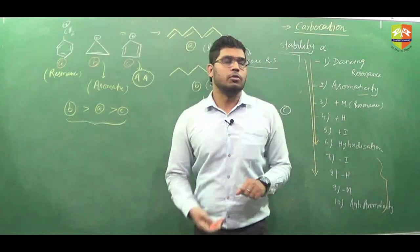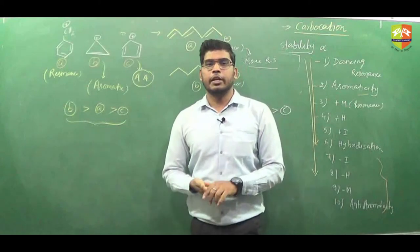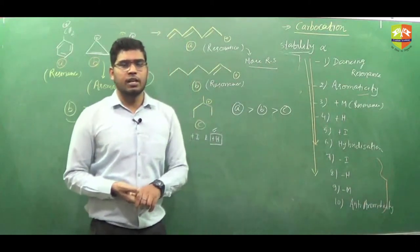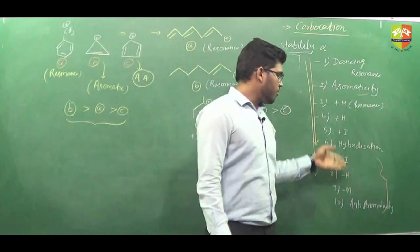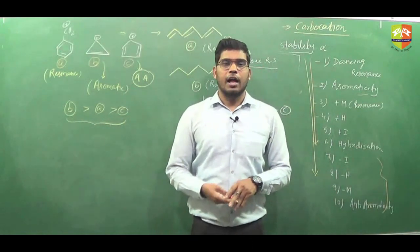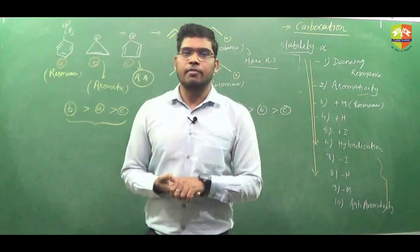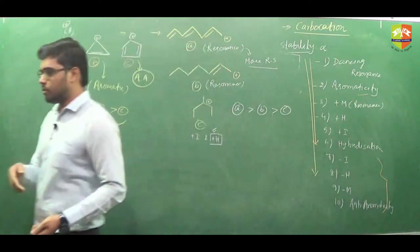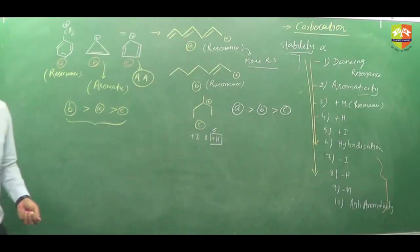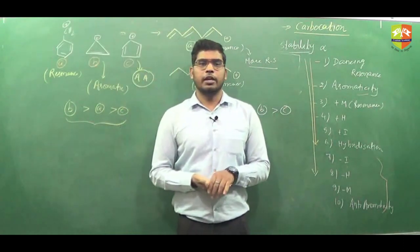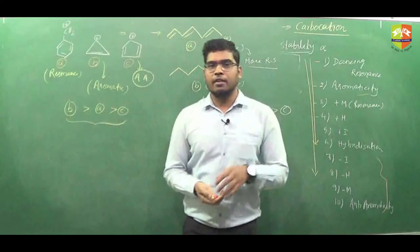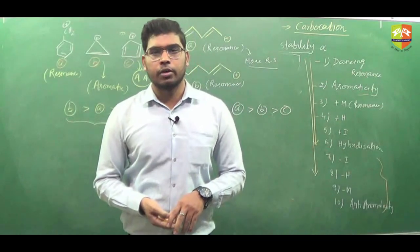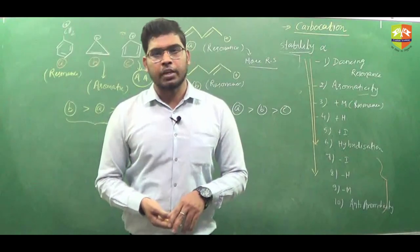We can compare carbocation stability on the basis of various electronic effects by checking which effects are operating in a given molecule. Next class we will see the stability of free radicals — in free radicals, aromaticity effects will not be discussed. We have almost finished 80 percent of GOC. Remaining topics include free radical and carbanion stability, acidity and basicity depending on all electronic effects, and finally tautomerism. See you in the next class.